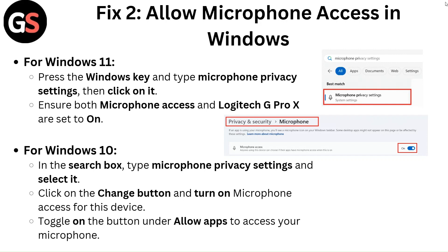For Windows 10, in the search box type microphone privacy settings and select it. Click on the change button and turn on microphone access for this device. Toggle on the button under allow apps to access your microphone.